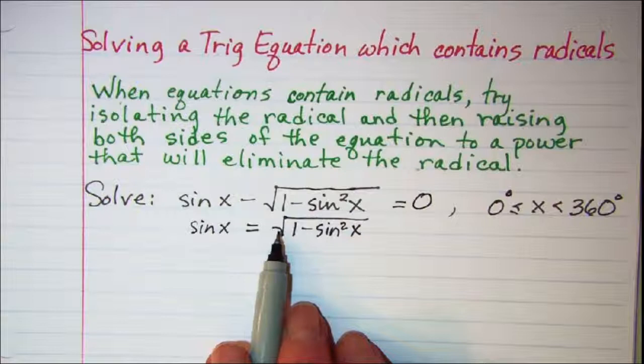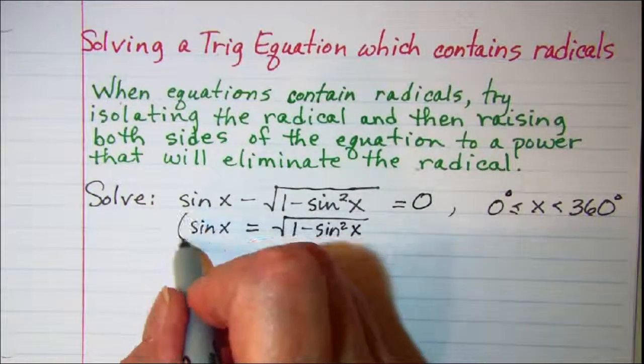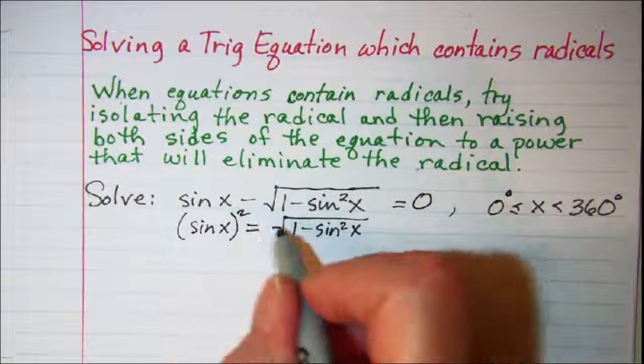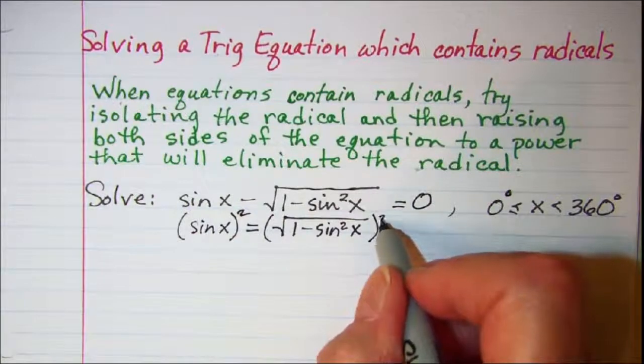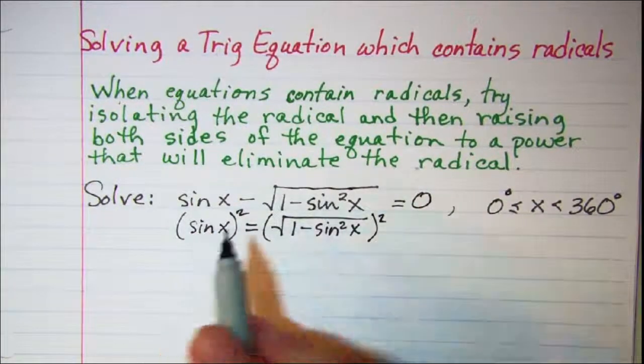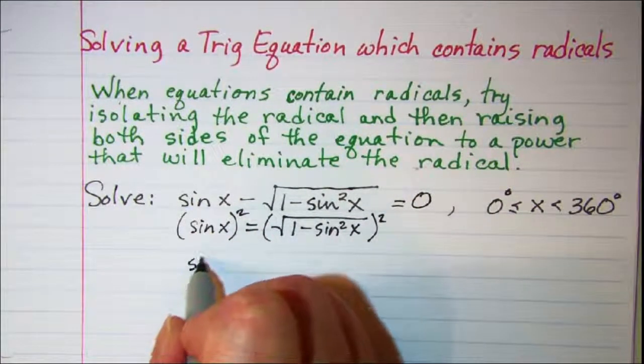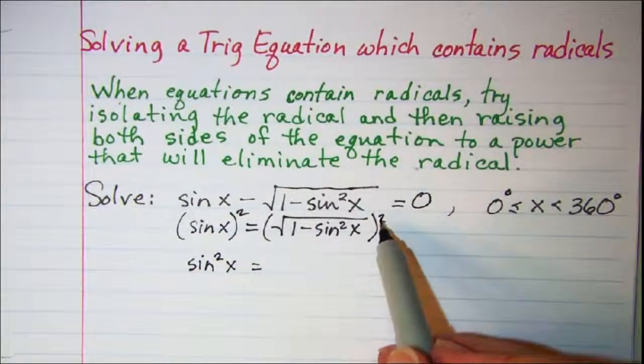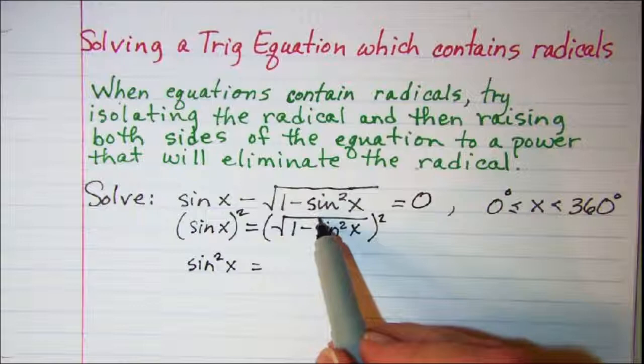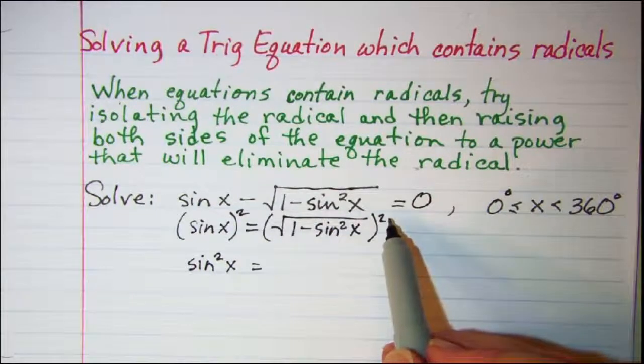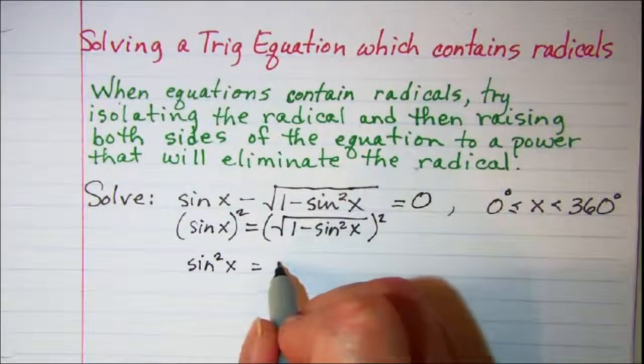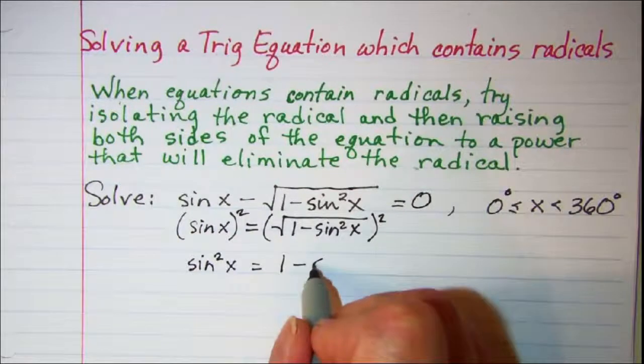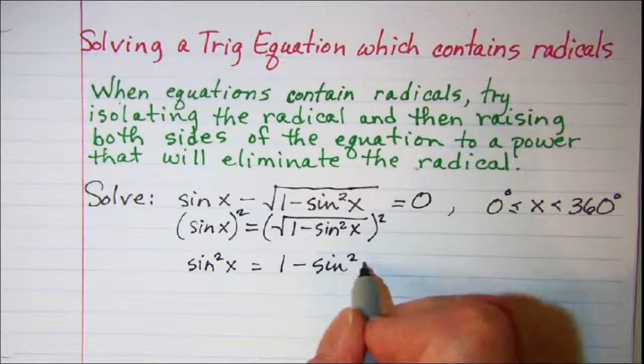To eliminate the square root, we'll need to square both sides. On the left side, I have sin squared x. On the right side, the squaring and the square rooting are inverse operations, so those go away and I just have 1 minus sin squared x.